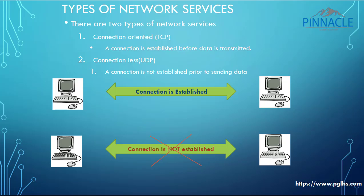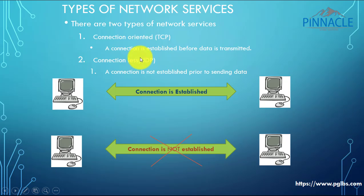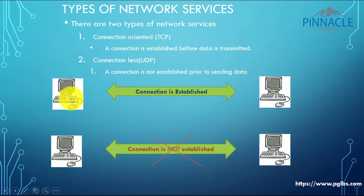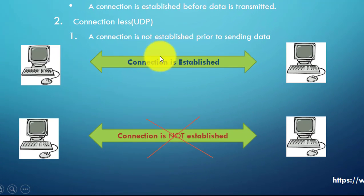There are two types of network services. One is called the connection-oriented service, or TCP. The name itself indicates what 'oriented' means - the entire network service depends upon a proper connection. That is, a connection has to be established before the data is transmitted. Just opposite to that is connectionless, where a connection is not established prior to sending data. This could sound a little confusing at this point.